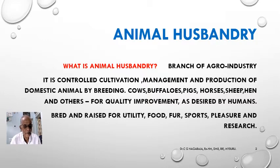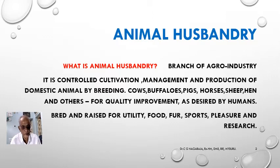What is Animal Husbandry? If this question is asked in your examination, say it is a branch of agro industry. Animal Husbandry is the controlled cultivation, management and production of domestic animals by breeding. Animals like cows, buffalos, pigs, horses, sheep, hens and other animals are bred for quality improvement and for what man desires.